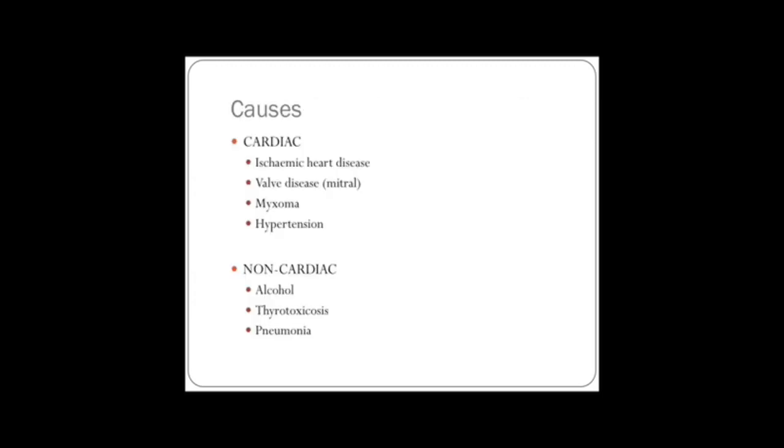Causes. Favourite one, Monday morning, consultant ward round, what are the causes of atrial fibrillation? Cardiac, non-cardiac is your best way to divide them up. And the important two for cardiac, you should remember, are ischemic heart disease and valve disease, particularly mitral valve disease, because that's the closest valve, and the most common valve to be affected in the heart. And non-cardiac causes, importantly, alcohol, thyrotoxicosis, and pneumonia. So those are the really important causes.